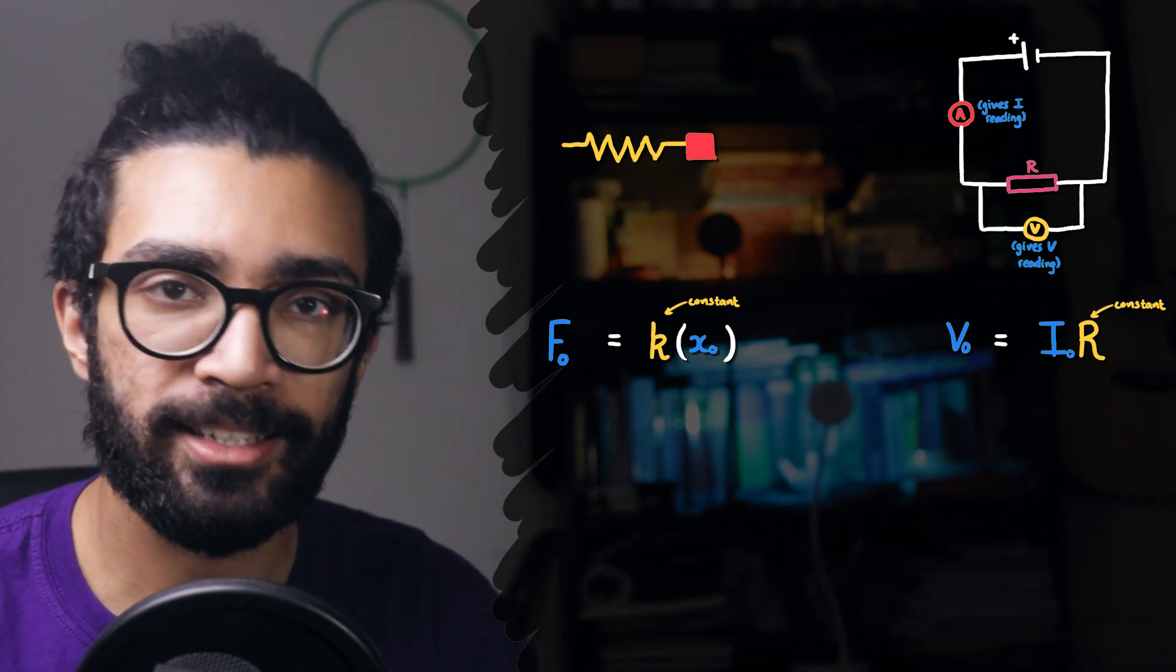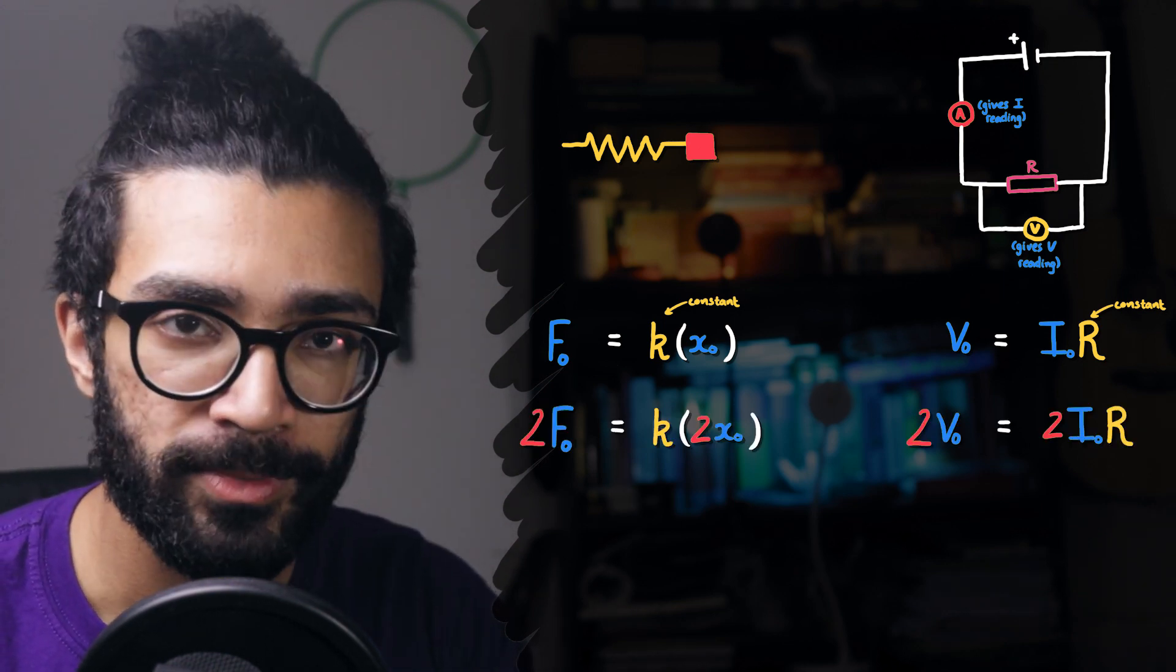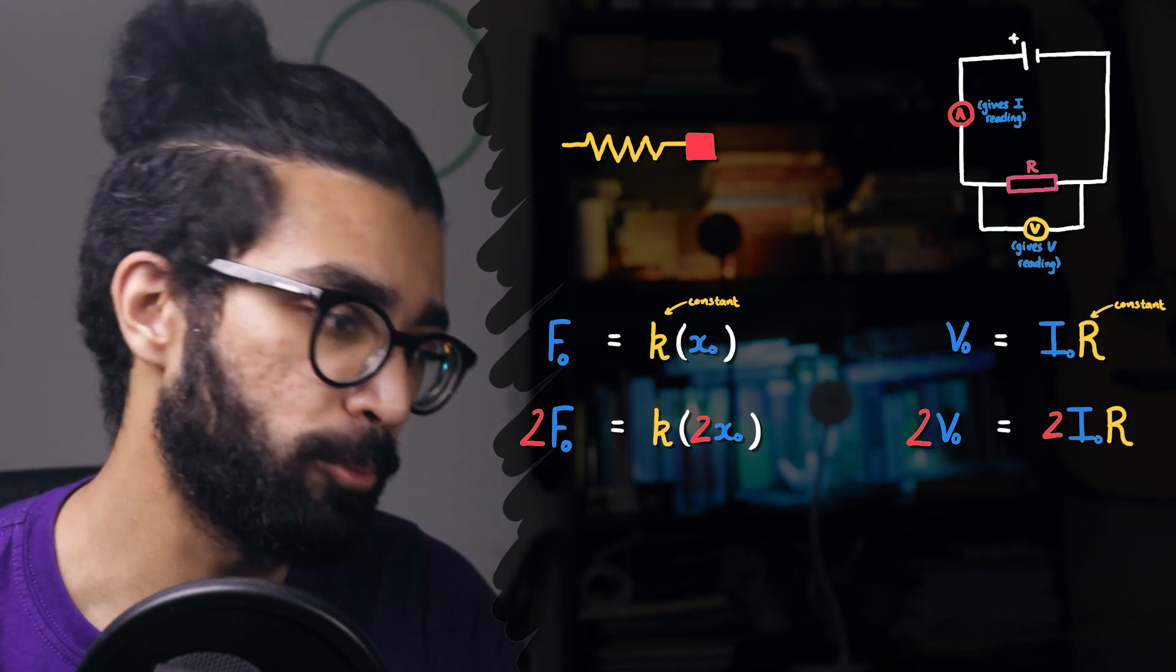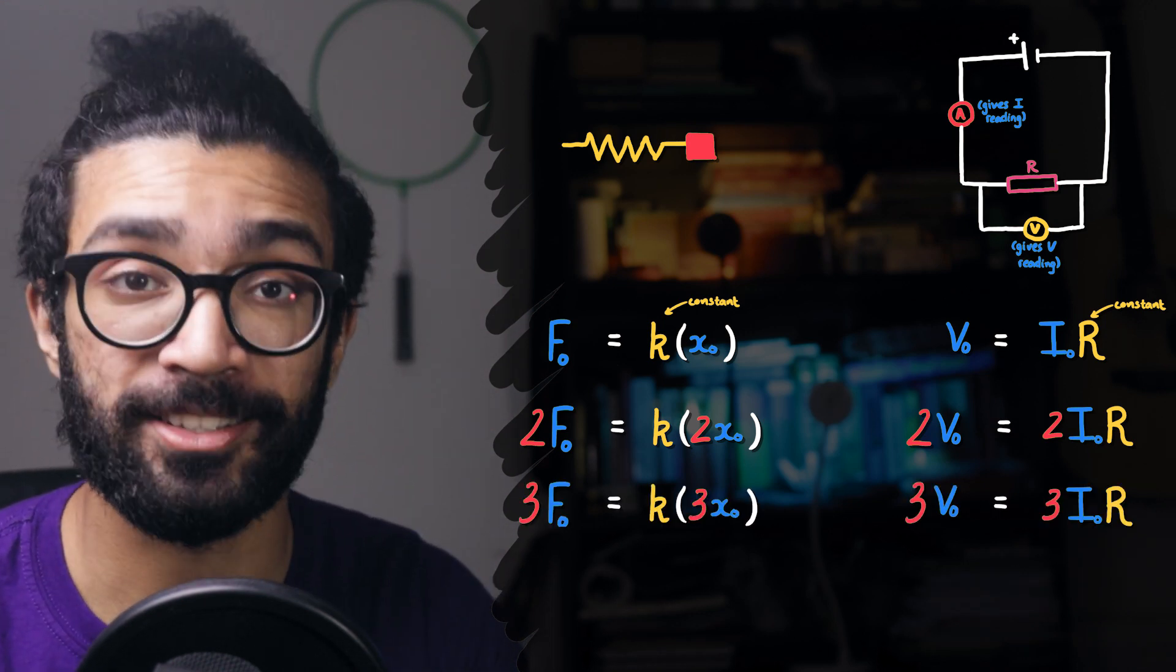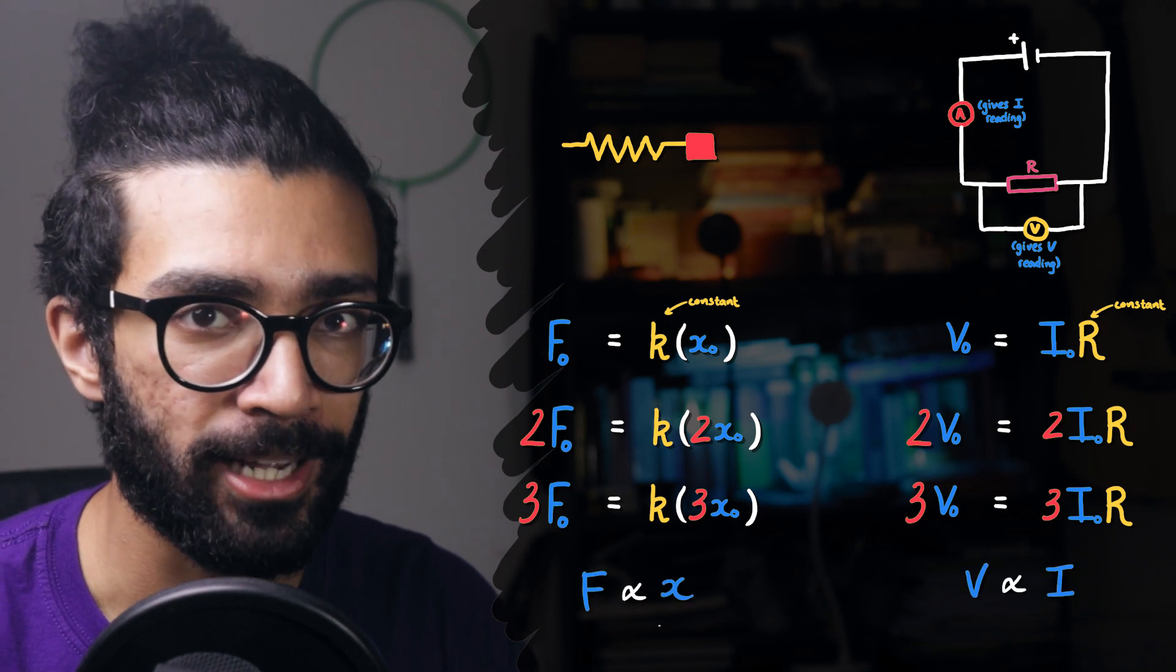We expect in both cases that if one quantity is doubled, the other quantity doubles as well. And if one quantity is trebled, the other trebles as well. And so on. That's what we mean by direct proportionality.